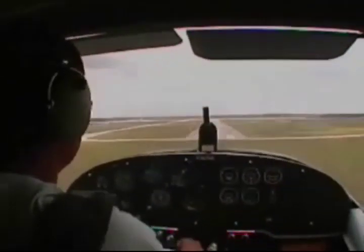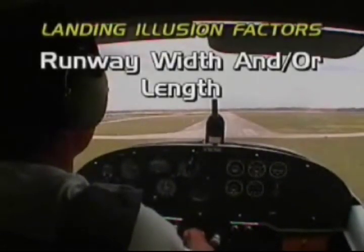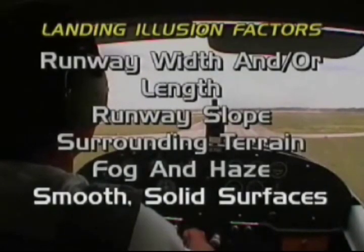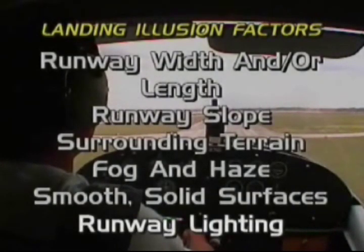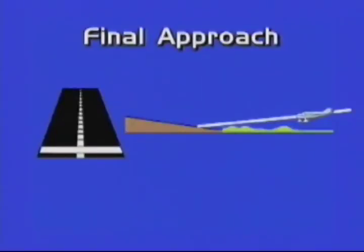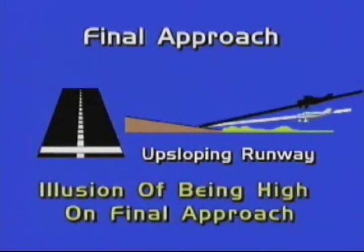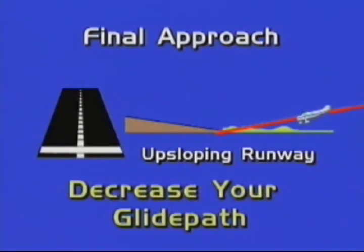Some factors that can create landing illusions are runway width and/or length, runway slope, surrounding terrain, fog and haze, smooth solid surfaces, and runway lighting. A final approach over flat terrain with an upsloping runway may produce a visual illusion of being high on final approach. If you believe this illusion and respond by pushing the nose down and this is performed too close to the ground, it may result in an accident.